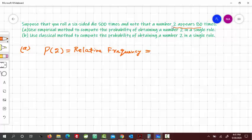Relative frequency is equal to the frequency of the number 2 divided by the sum of all frequencies. Here we rolled this die 500 times, so this would be all possible outcomes, so 500. That would be the denominator. And we have noted that a number 2 appears 80 times, so it would be 80 times divided by 500. That would be equal to 0.16 or 16%. This is empirical method.